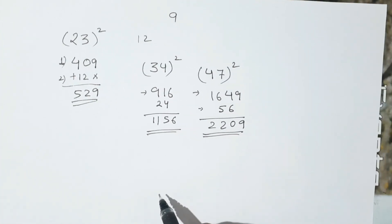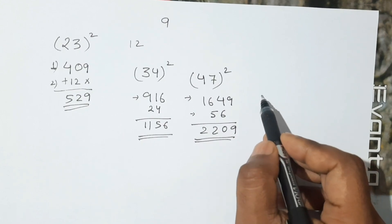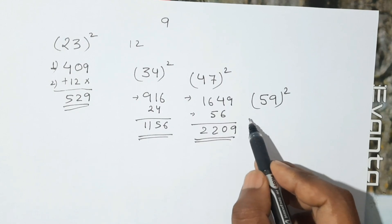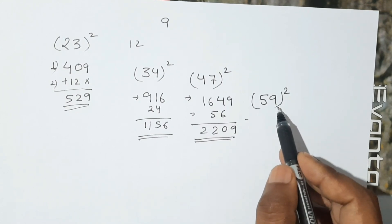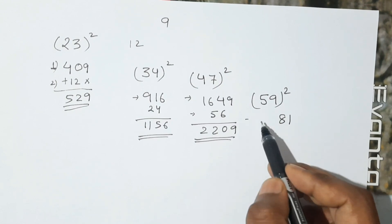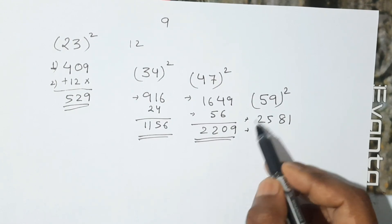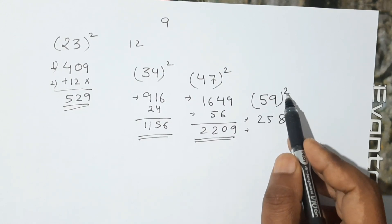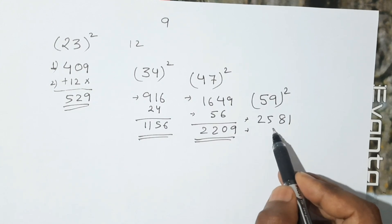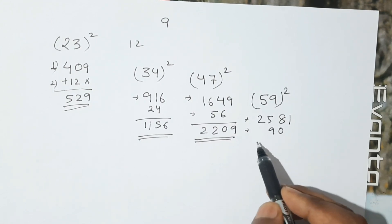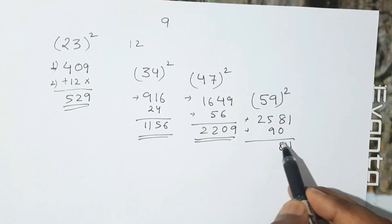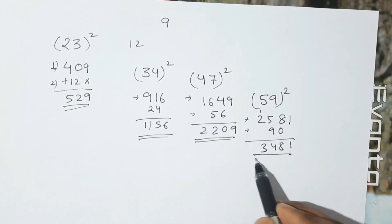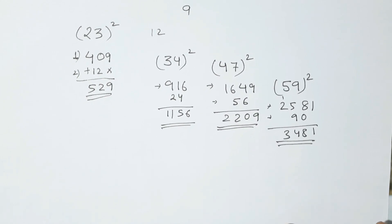Let's take 59 square. First step: 9 square is 81, 5 square is 25. Second step: multiply all these digits — 5 nines are 45, 45 into 2 is 90. We add 90 here, leaving the last space empty. Adding: 1, then 8, then 9 plus 5 is 14 — carry 1 — 4, then 2 plus 1 is 3. This is the square of 59, which is 3481.